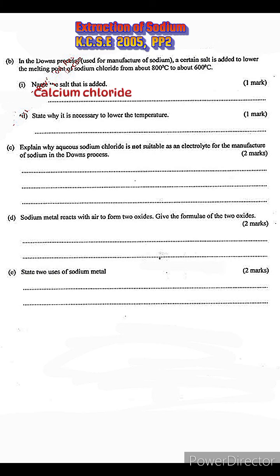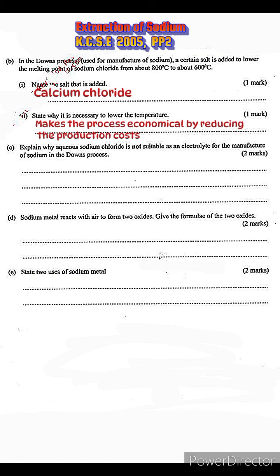State why it is necessary to lower the temperature. Melting is carried out with the use of electricity, so if sodium chloride were to be melted at temperatures as high as 800 degrees Celsius, a lot of electricity would be used, which would in turn increase the production costs. In order to minimize these costs, the melting point is lowered to 600 degrees Celsius, making the whole process economical.